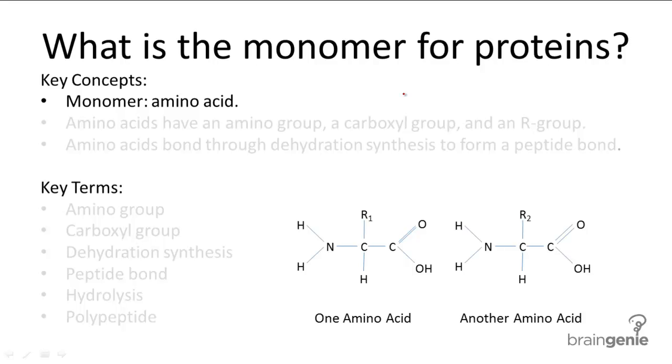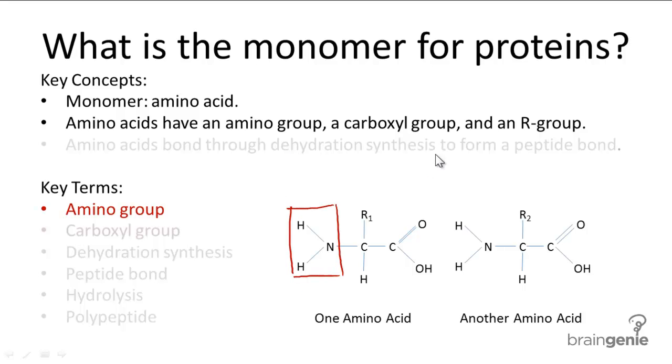All amino acids have an amino group, a carboxyl group, and an R group. An amino group is simply the name for the NH2 group shown here. A carboxyl group is the CO2H group shown here. It's easier to remember a carboxyl group if you remember the double bond between the C and the O atom. The carboxyl group is also acidic.